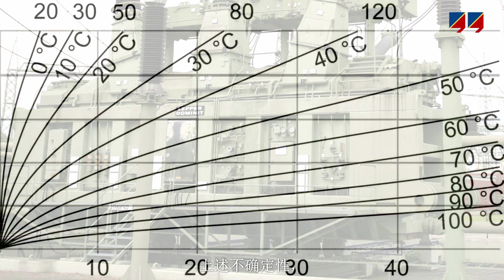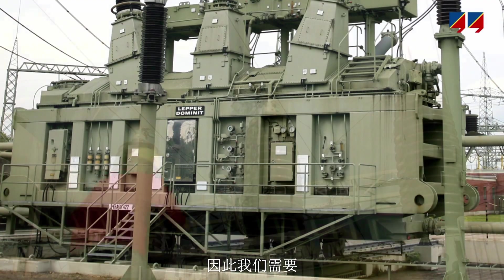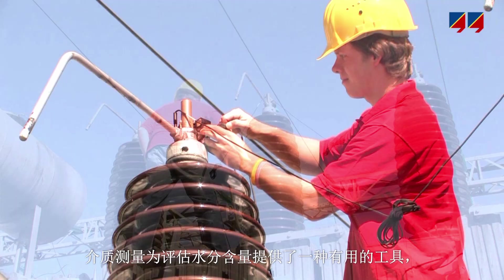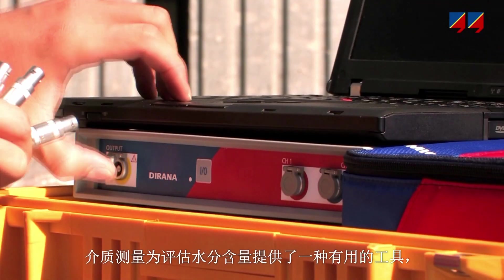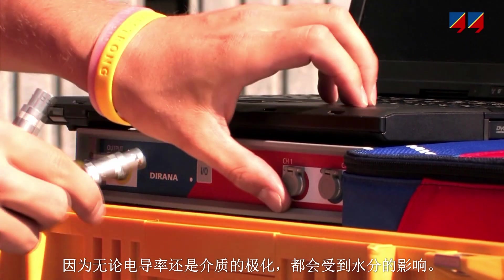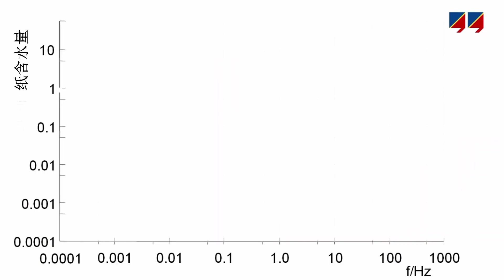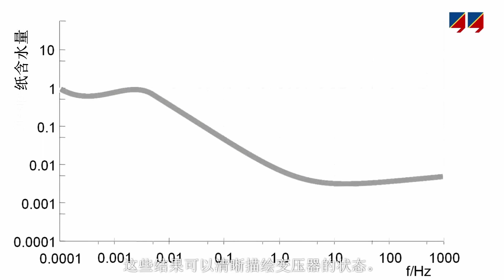These uncertainties, plus the roundabout way of approximating the moisture in paper via the moisture in oil, call for a more direct and precise method. The dielectric measurement offers a useful tool, especially for the evaluation of the moisture content, as both conductivity and polarization of dielectrics are values influenced by moisture. During the dielectric measurement, the insulation is exposed to a wide band of frequencies and its response to these is recorded, giving a clear picture of the state of the transformer.